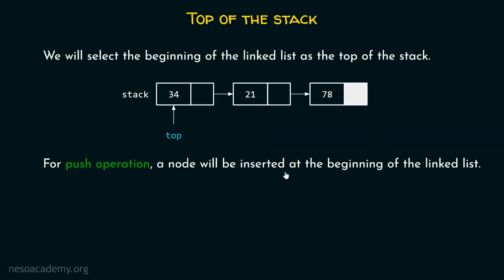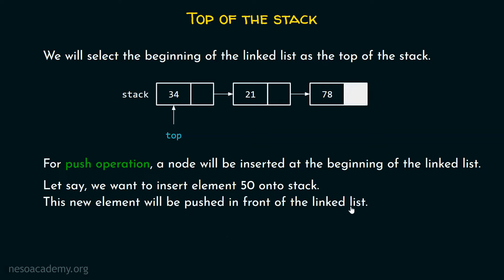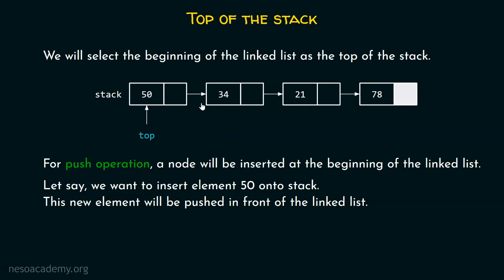For push operation, a node will be inserted at the beginning of the linked list, because we have selected the first node as the top of the stack. Let's say we want to insert element 50 onto the stack — this new element will be pushed in front of the linked list. We must put this element inside a node and insert that node in front of the linked list. After inserting, the top pointer must point to the first node, so this is our new top.